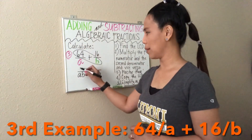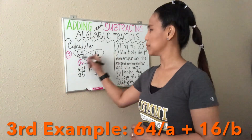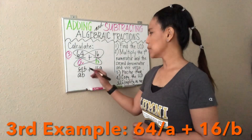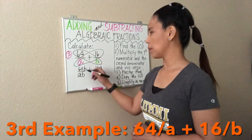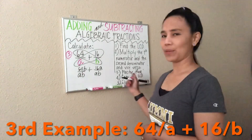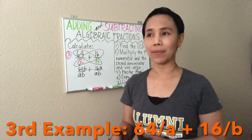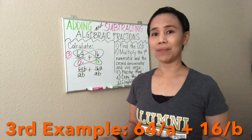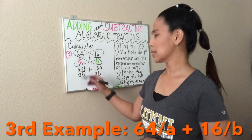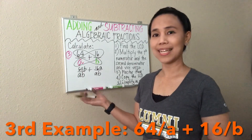The next step is to apply the butterfly approach. 64 times B gives us 64B. And then A times 16 gives us 16A. Now, since they have different variables — B here and A here — we cannot right away add them. What we can do is factor them. We have to think of a number that divides both 64 and 16 exactly, using the same number for both. Thinking of 64 and 16, I could think of 4, 2, 8, or 16. The greatest is 16.